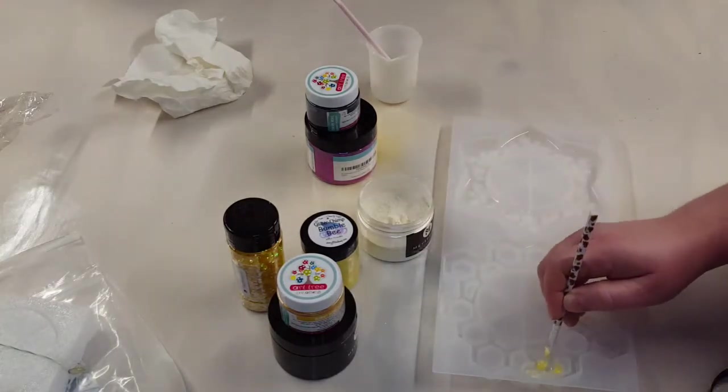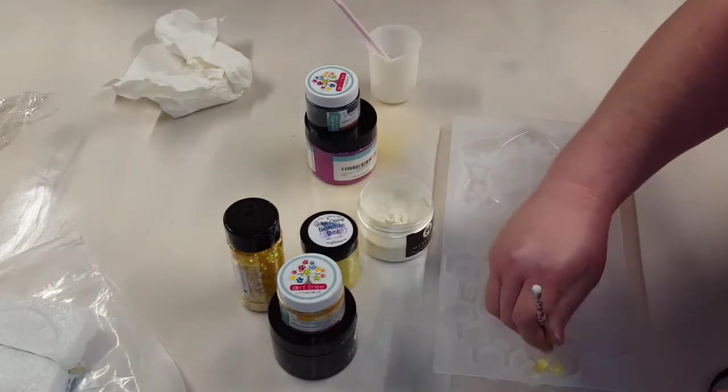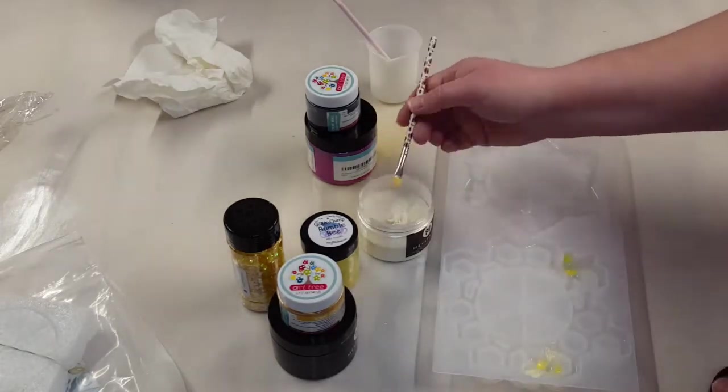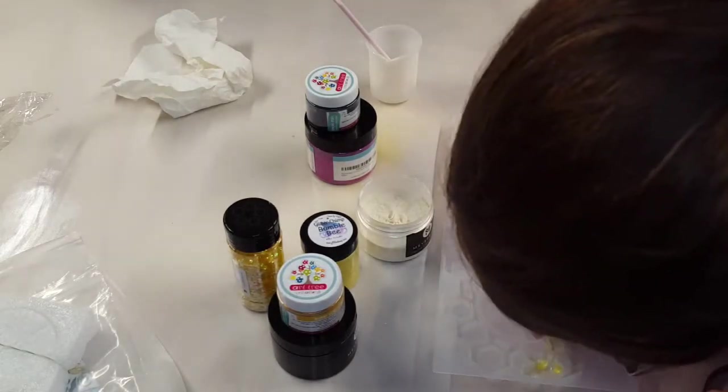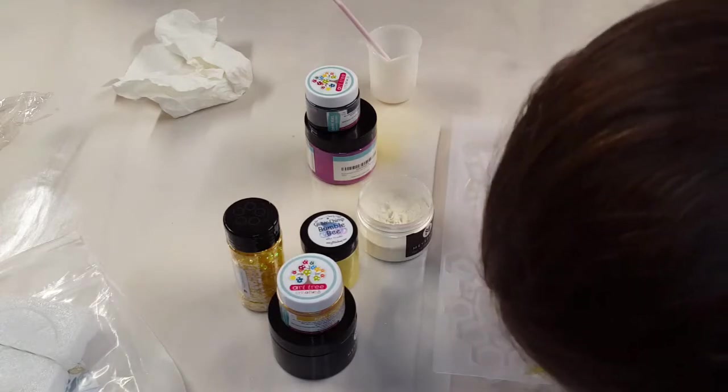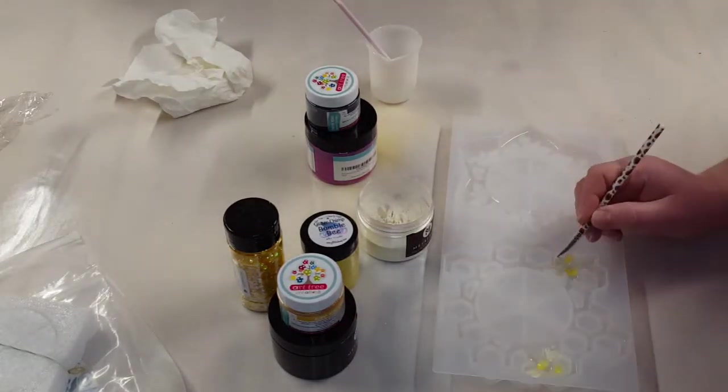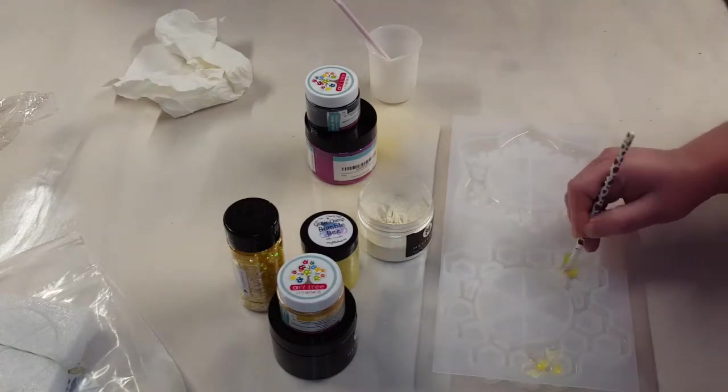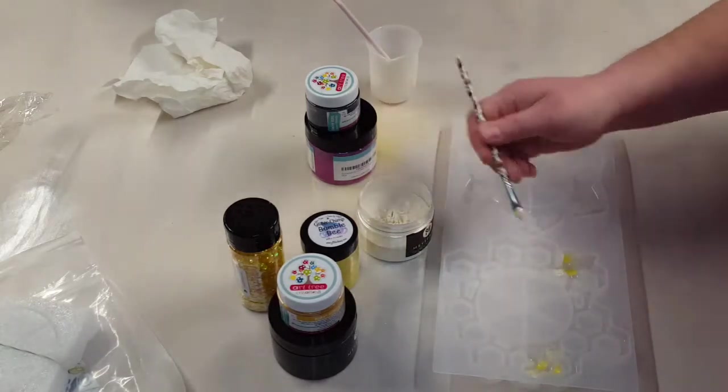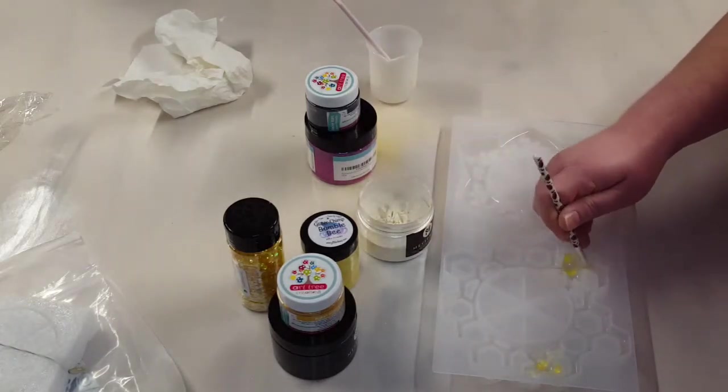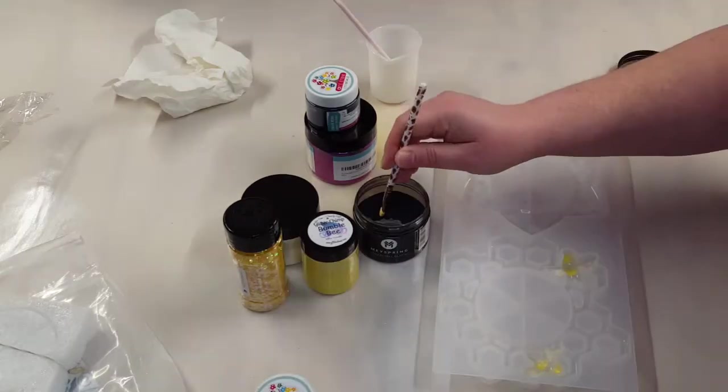So like I said, I'm going to start with my bees. I'm just using this cheap eyeshadow brush to paint in my micas on the bees. I started with the yellow, it's called Bumblebee from Glitter Chimp, and this white, this is a really pretty white with a gold shift to it, that's from Amazon.